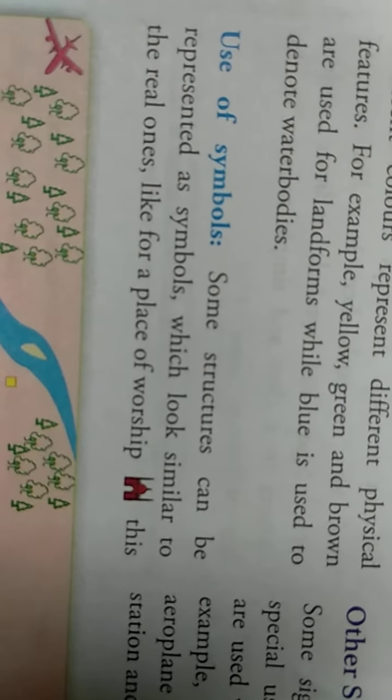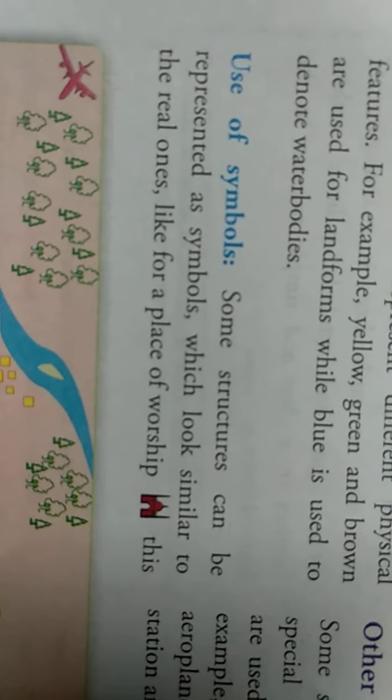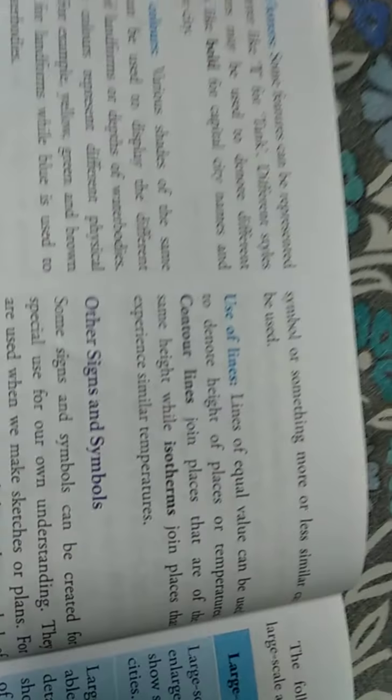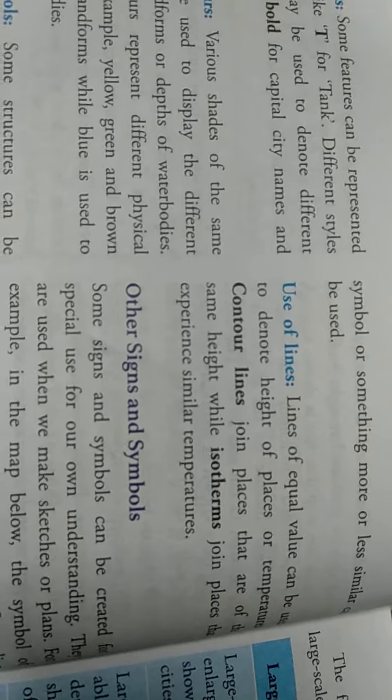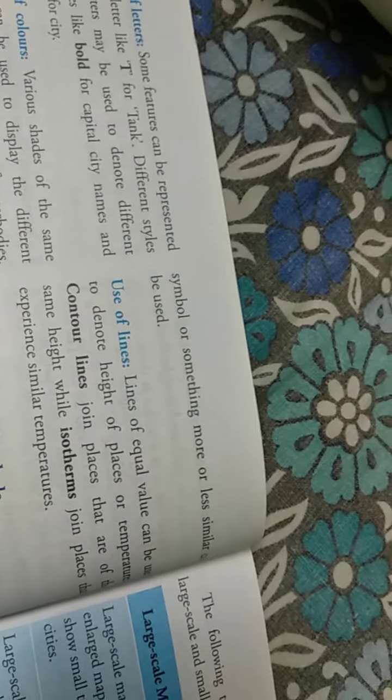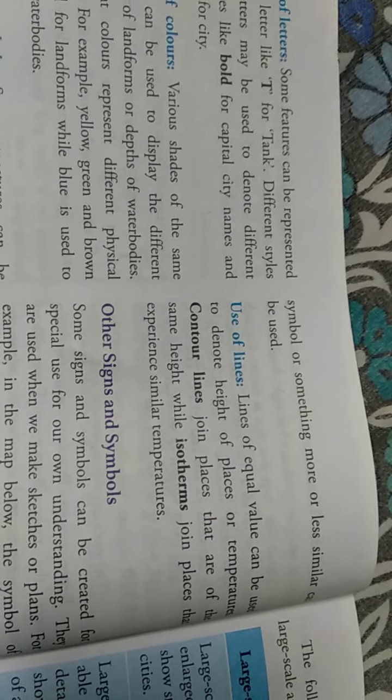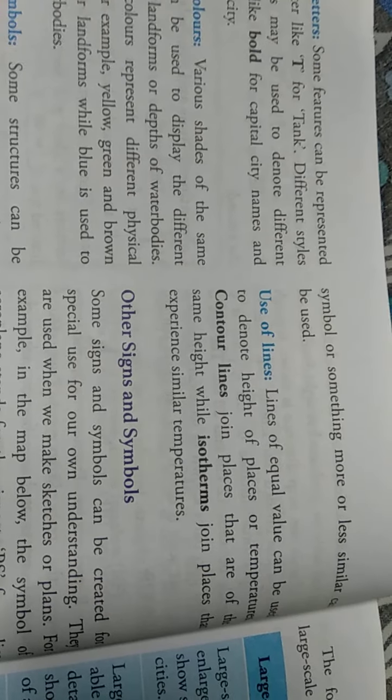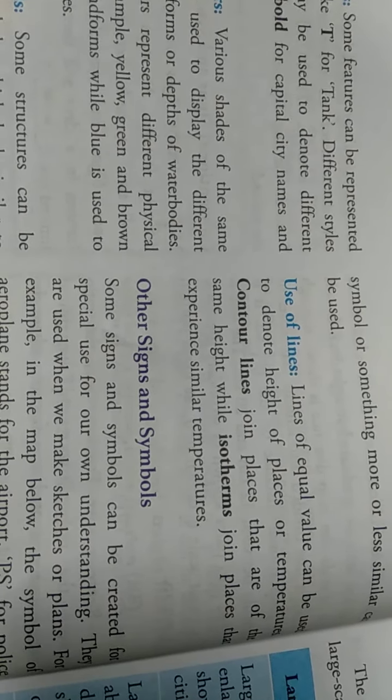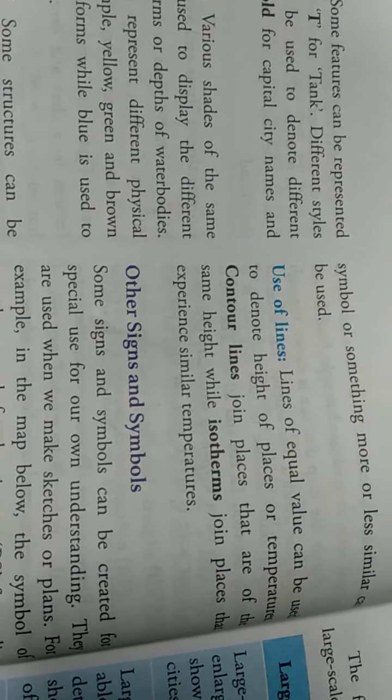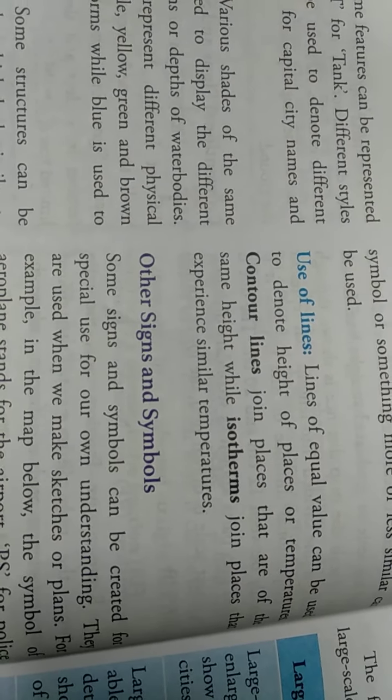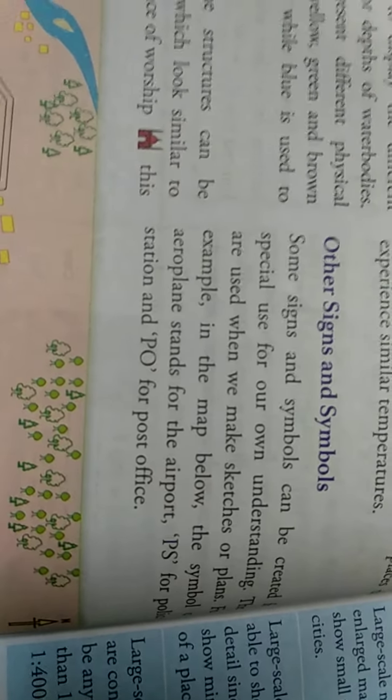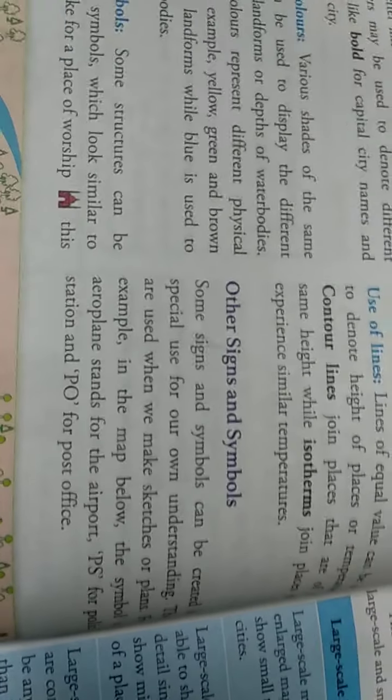Symbols are used to give meaning, like for temples and places of worship. Lines and underlines are used. Lines of equal value can be used to denote height and places or temperature, for contour lines and isotherms. Other signs and symbols can be created to give special meaning.